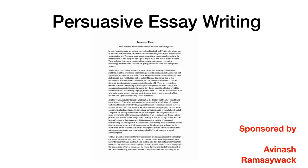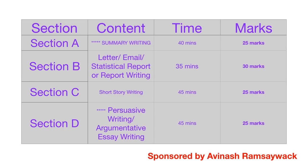Persuasive essay writing. This slide aims to give you a heads up about what can actually be in your CSEC English A Paper 2. Sections A, B, C, and D are the sections in Paper 2. Section A focuses on summary writing. Section B can be one of four things: a letter or an email, a statistical report, or a memo. Section C will be your short story, and Section D will be your persuasive essay, also known as your argumentative essay. This channel will focus on all of these.